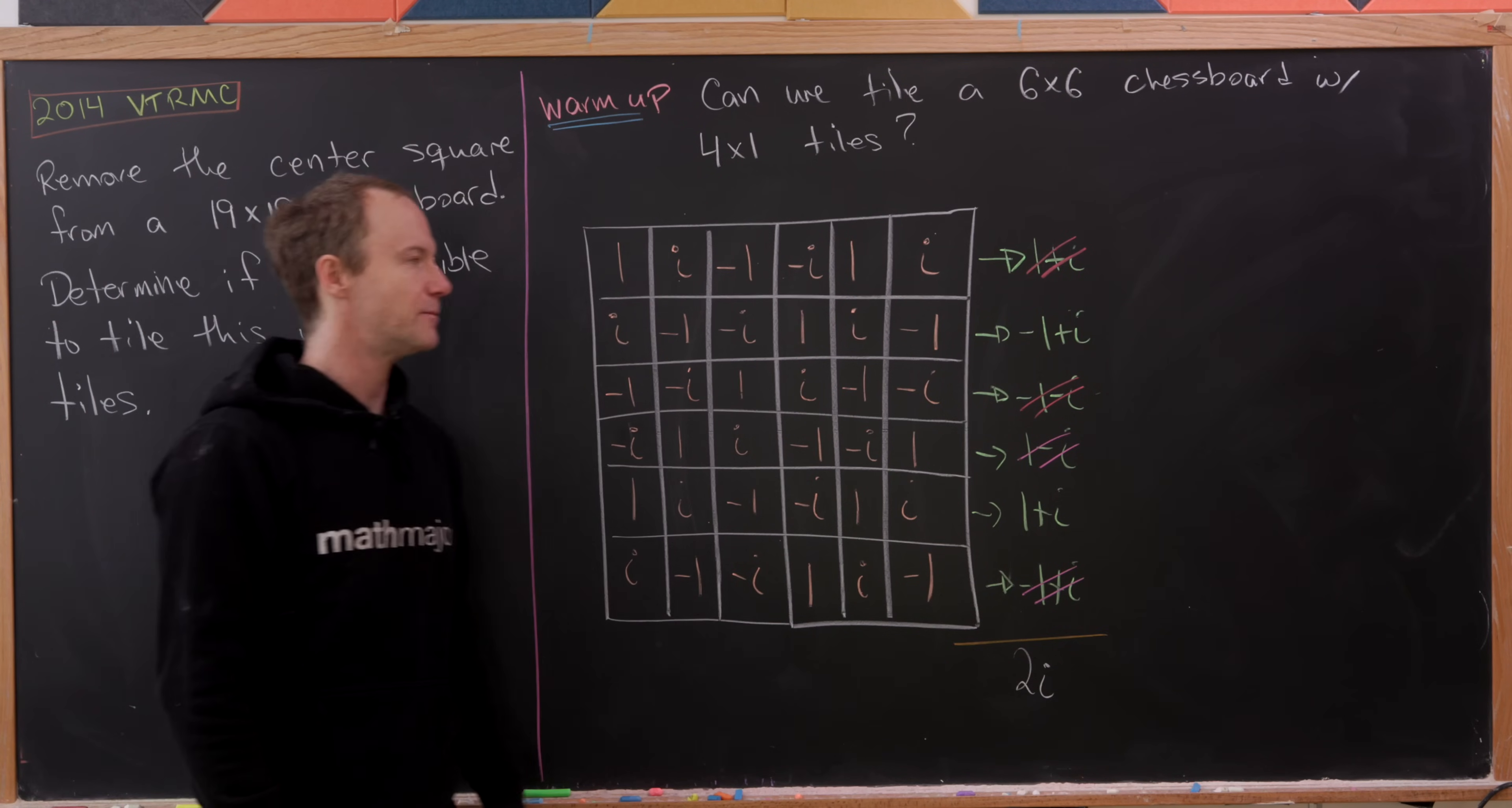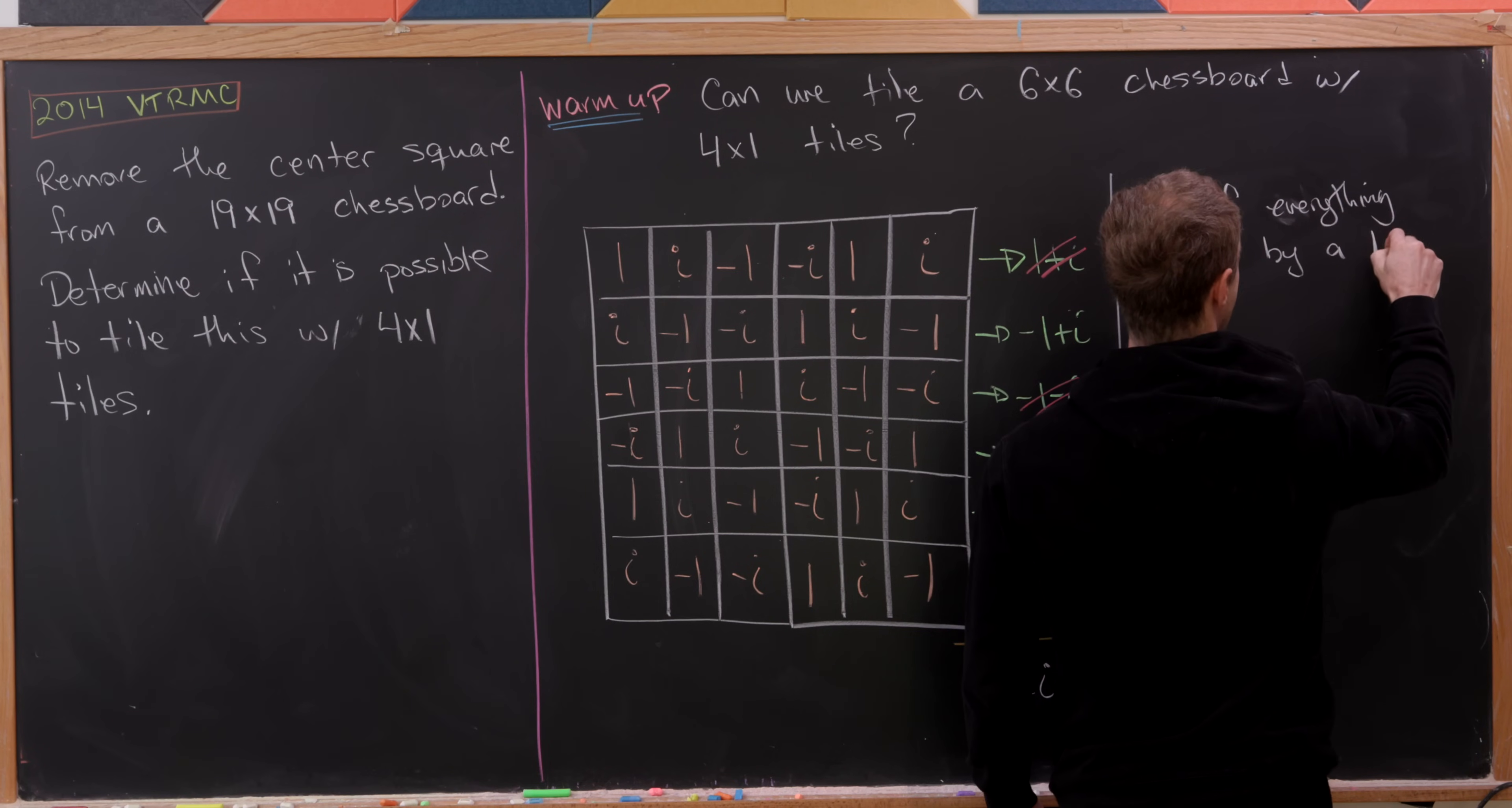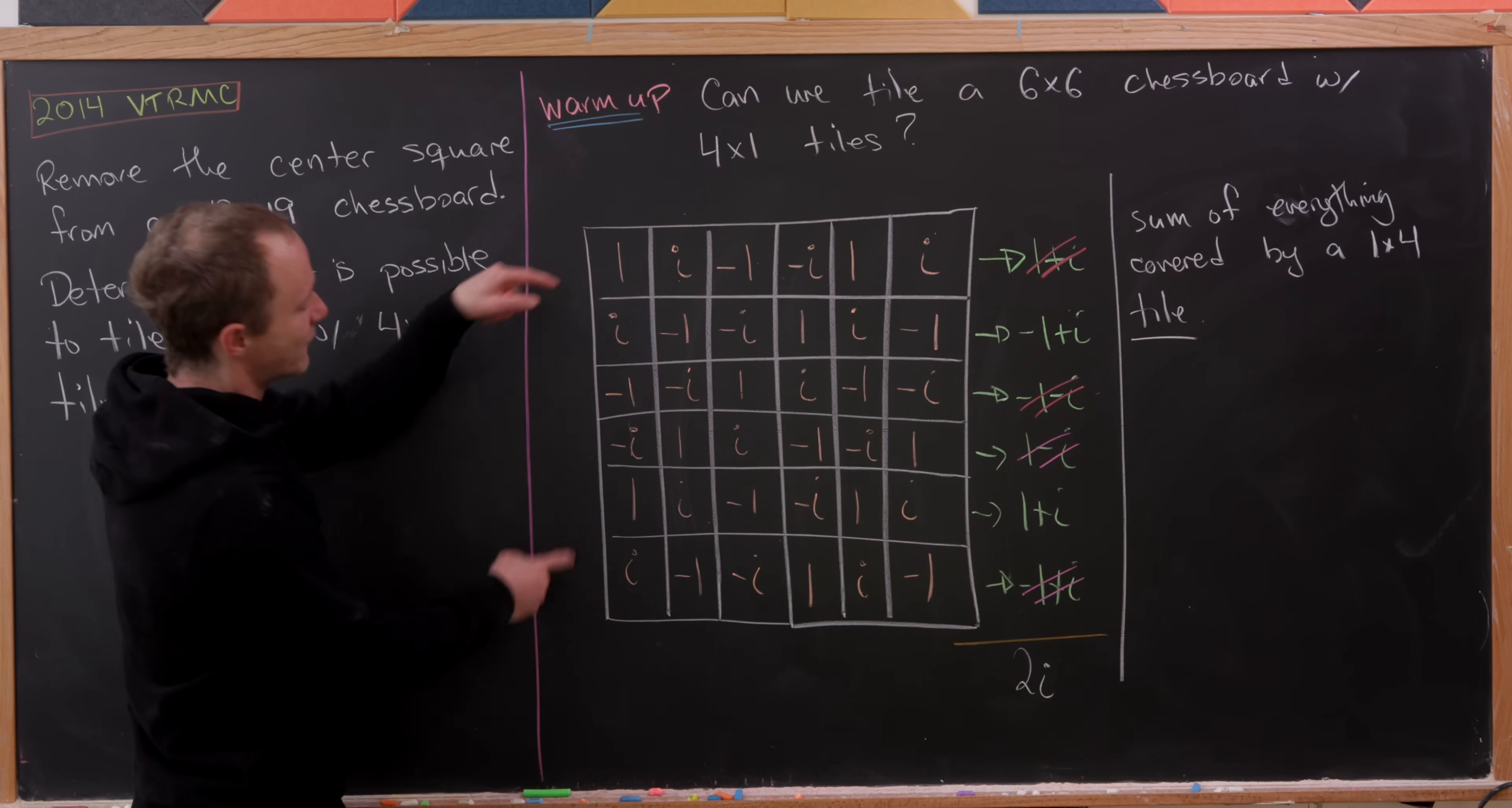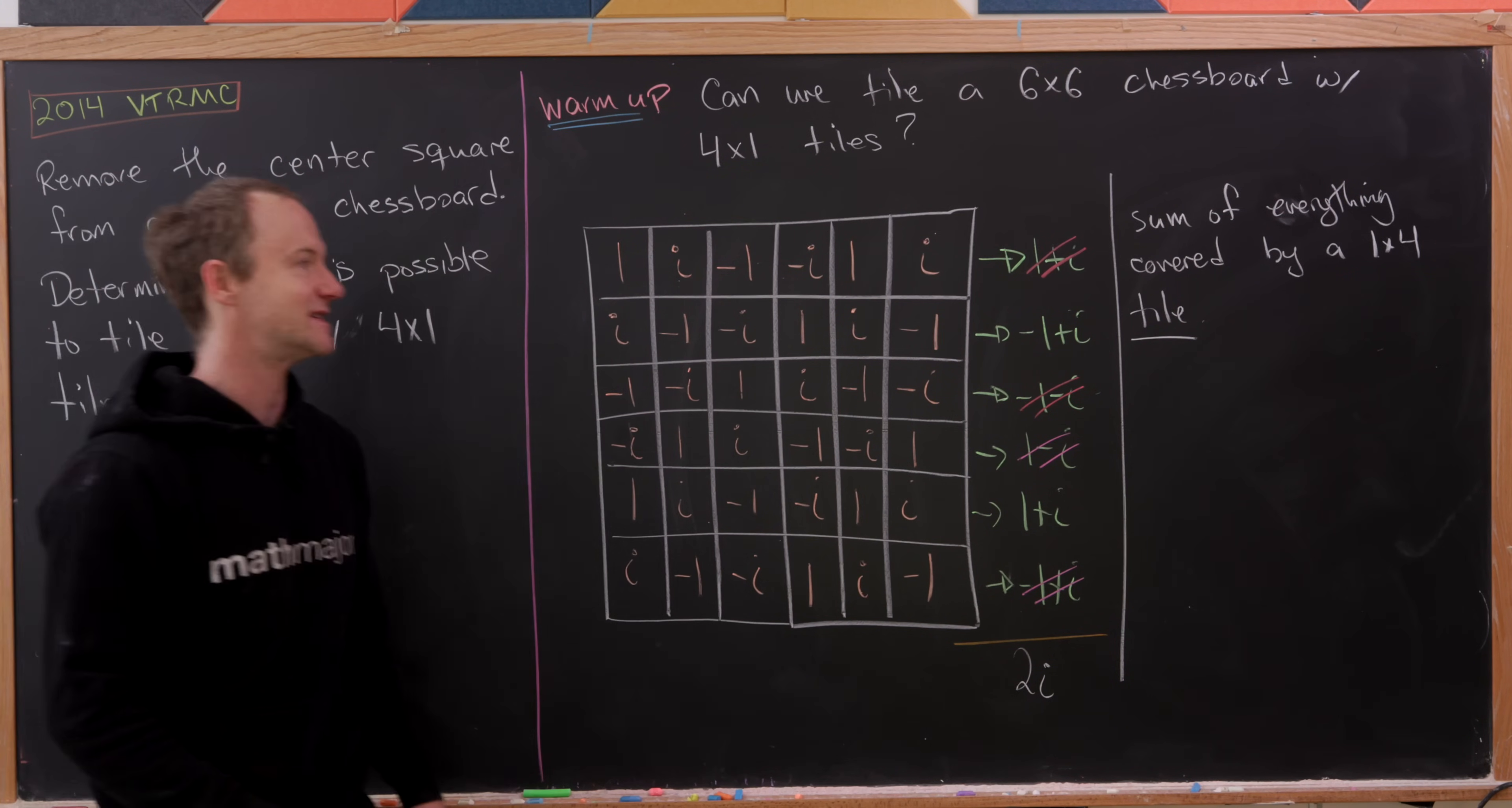But now let's compare that to the sum of everything covered by a 1 by 4 tile. If we lay a tile across these four, the sum is obviously equal to 0. In fact, you can see any tile will cover numbers that sum to 0.